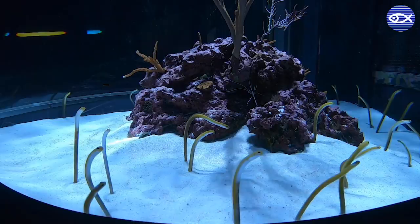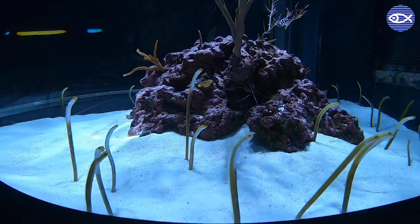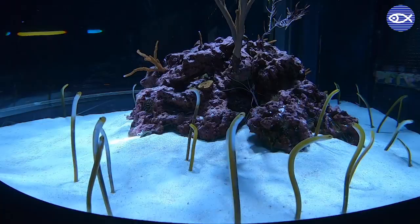Some species of garden eel are found in Caribbean coral reef ecosystems while others live in the Indo-Pacific Ocean. These eels can swim but they prefer to stay in their burrows for protection from predators.